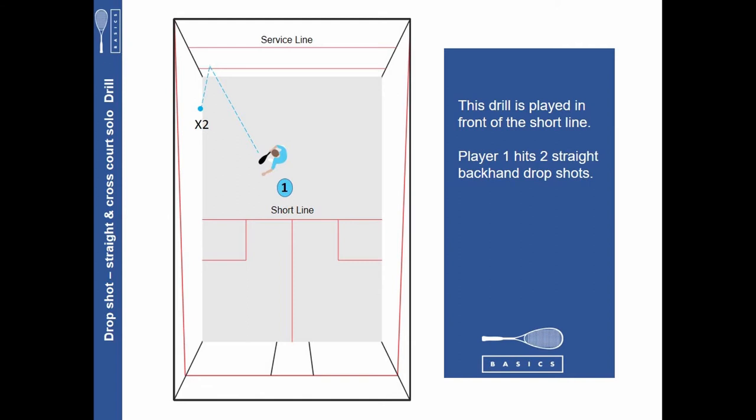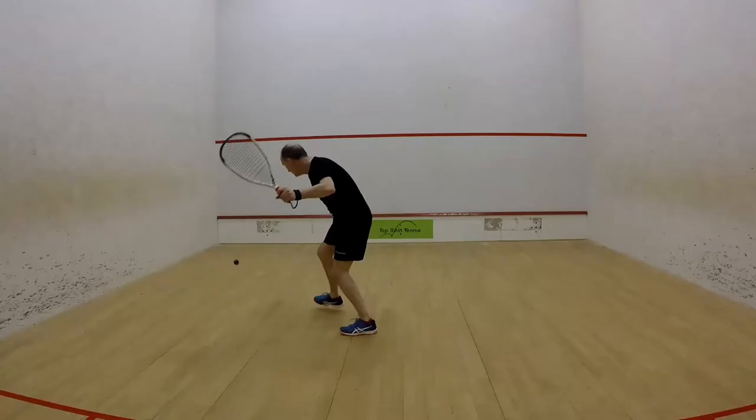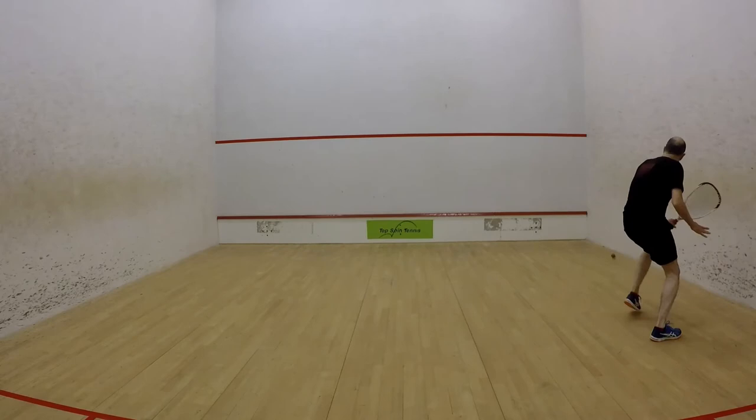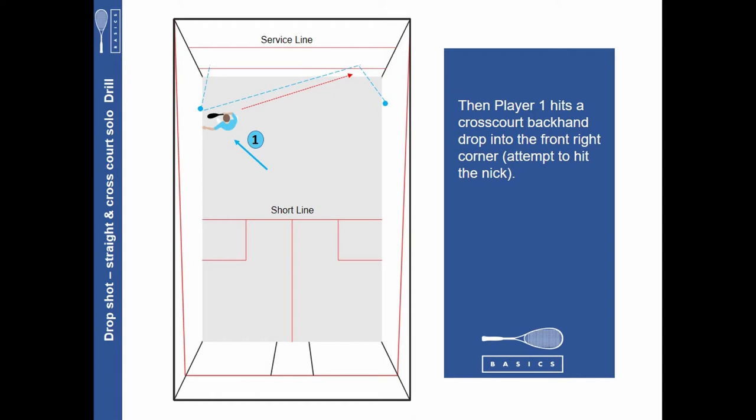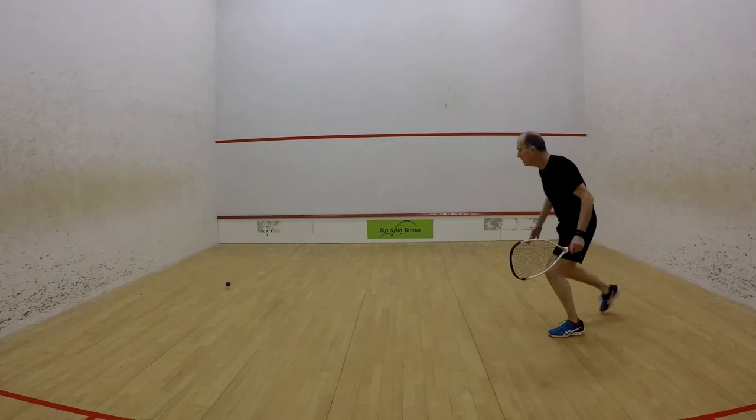This drill is played in front of the short line. Player one hits two straight backhand drop shots. Then player one hits a cross court backhand drop into the front right corner, attempting to hit the nick.